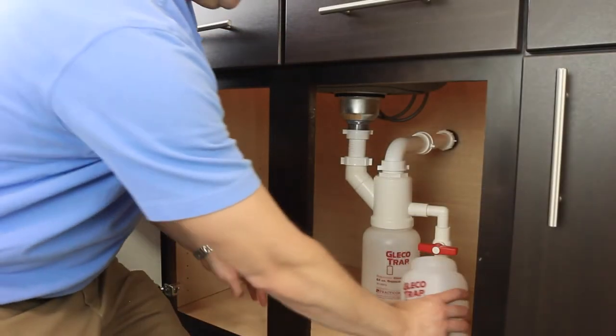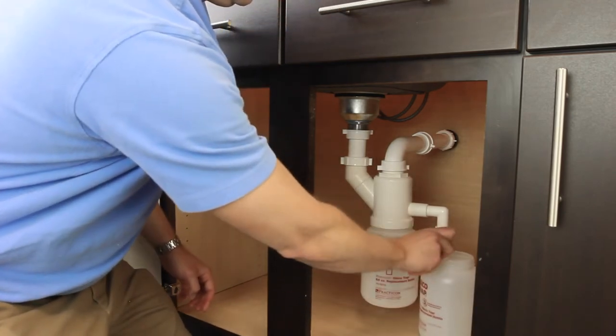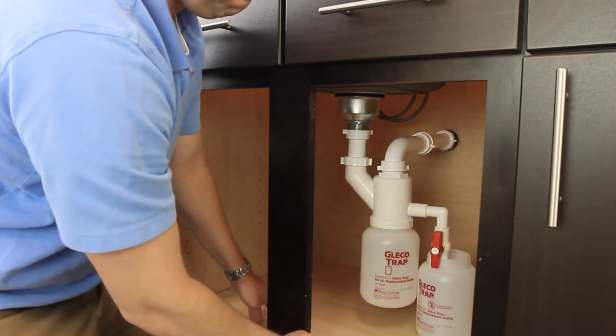Replacing your GlecoTrap takes only 90 seconds or less. First, open the red side drain to siphon the water that sits on the top of the trap. Use the replacement GlecoTrap bottle to catch the water.